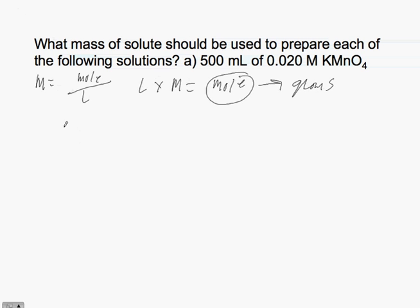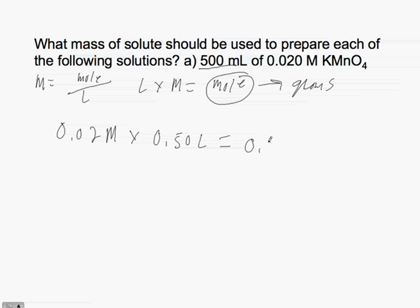For this particular problem, we're told we have 0.02 molar and 500 milliliters. If we convert that into liters, we divide by 1,000 — 1,000 milliliters equals 1 liter — which gives us 0.50 liters. Multiplying by the molarity gives us 0.01 moles of potassium permanganate.